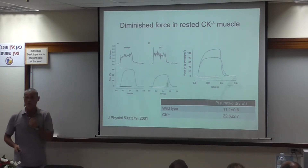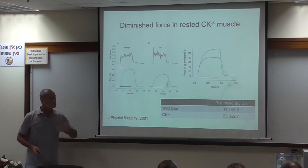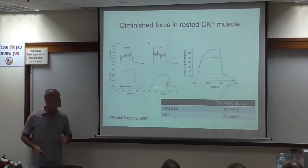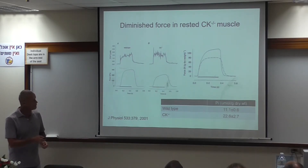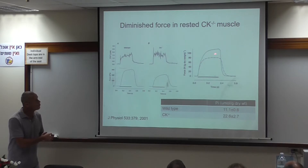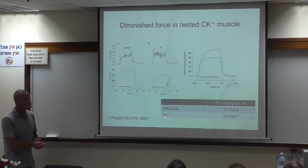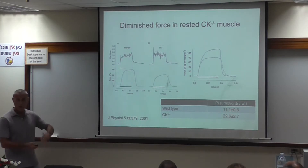Since single fibers don't provide enough material for analytical biochemistry, we repeated the experiment on whole EDL — extensor digitorum longus — muscles from the mouse leg. Again, in the wild-type muscle force is high, whereas in the CK knockout force is markedly lower. In the wild-type muscle the content of inorganic phosphate is about 11 micromoles per gram dry weight, whereas in the CK knockout in the basal rested state it is about two times higher. In other words, when phosphate is elevated, force is decreased.